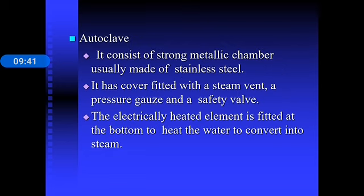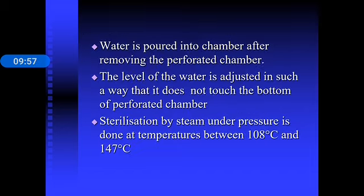The autoclave consists of a strong metallic chamber, usually made of stainless steel, with a cover that has a steam vent, a pressure gauge, and a safety valve. An electrically heated element at the bottom heats water to convert it into steam. Water is poured into the chamber above a perforated chamber that holds the materials, with the water level adjusted so it does not touch the bottom of the perforated chamber.